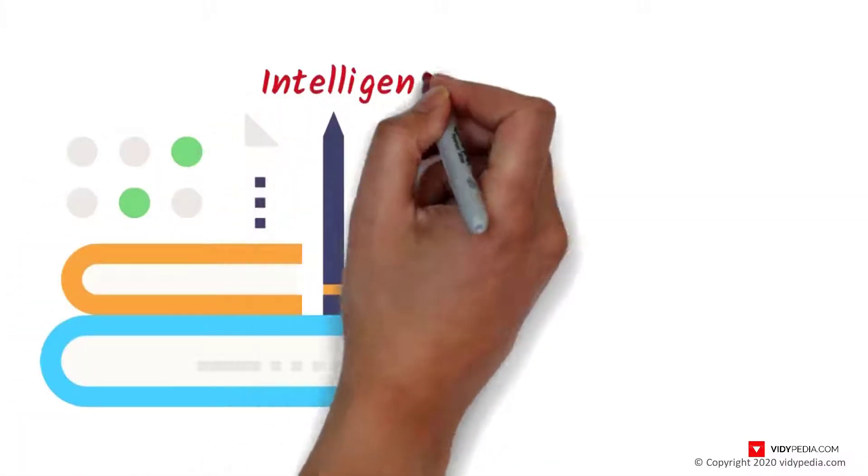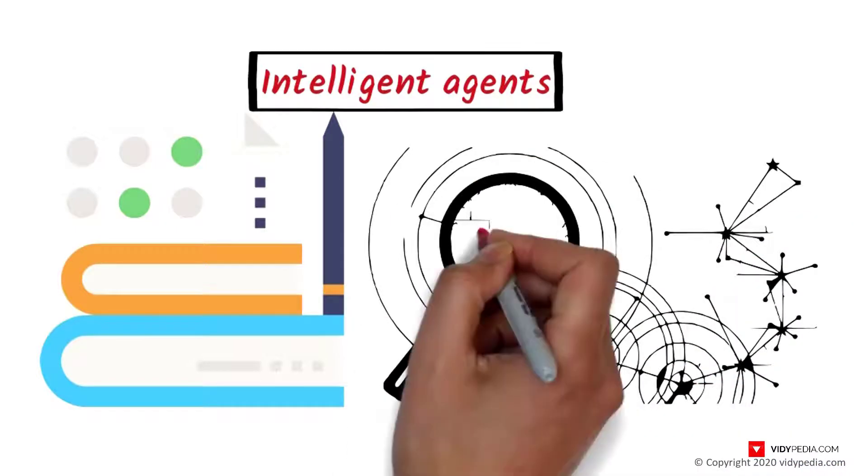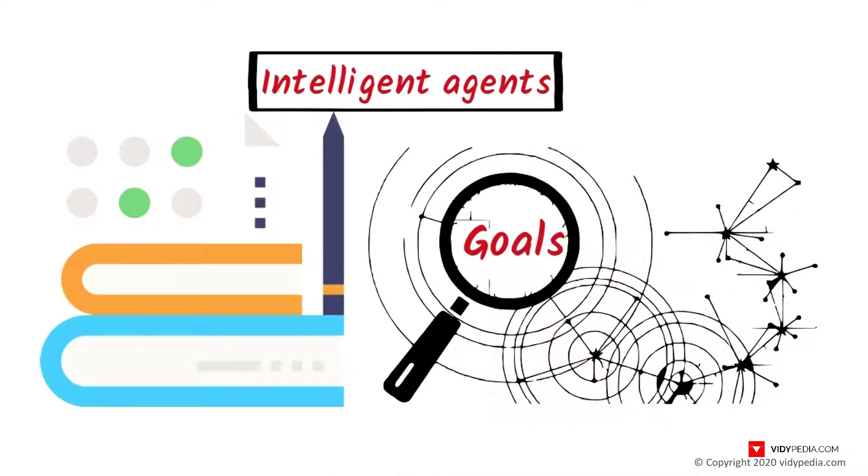Leading AI textbooks define the field as the study of intelligent agents, a device that perceives its environment and takes actions that maximize its chances of successfully achieving its goals.